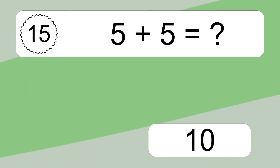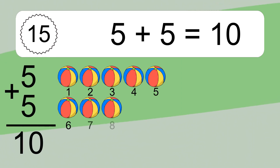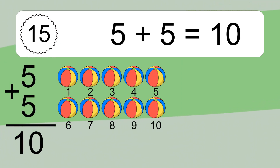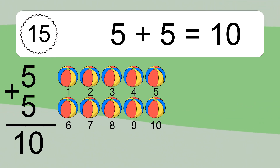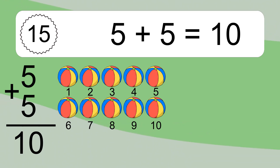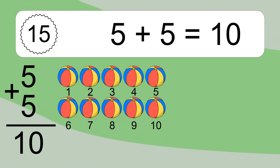5 plus 5 equals what? 5 plus 5 equals 10. Let's count it: 1, 2, 3, 4, 5, 6, 7, 8, 9, 10.